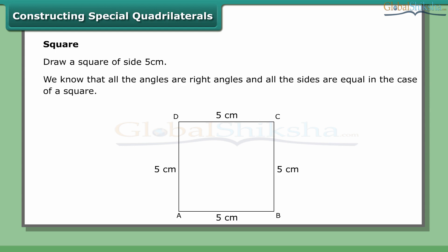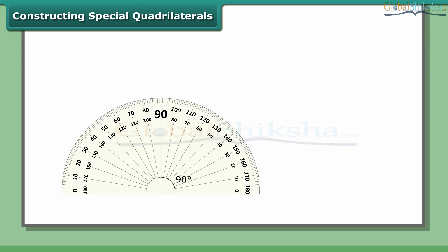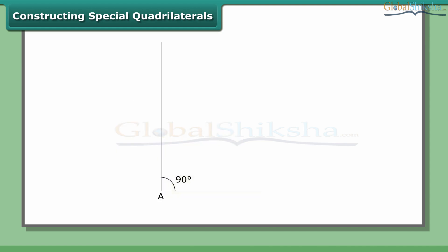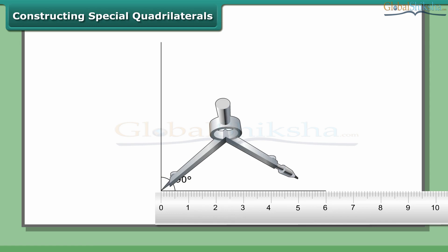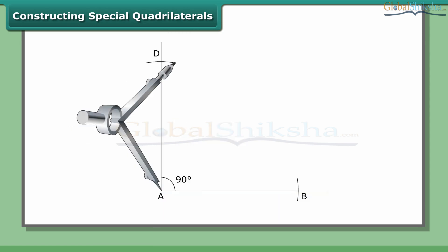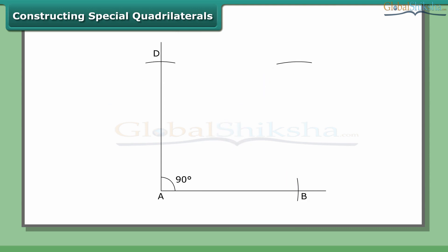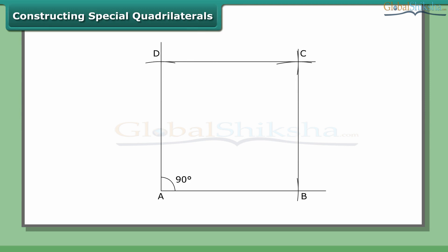Constructing a special quadrilateral — a square: draw a square of side 5 cm. All angles are right angles and all sides are equal. Steps: draw a right angle at point A using a protractor or compass and ruler. Set the compass to 5 cm and cut off sides AB and AD along the arms of the right angle. With B as center draw an arc; with D as center draw an arc to intersect it at C. Join C to B and D. ABCD is the required square.